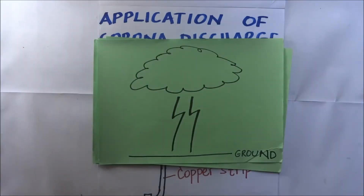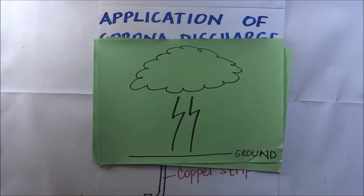This spark generates a lot of heat, which warms up the air around it, causing it to rise. When the air rises, air from neighboring layers rushes in to replace it, and in so doing a loud sound is produced. This loud sound is what we call thunder.